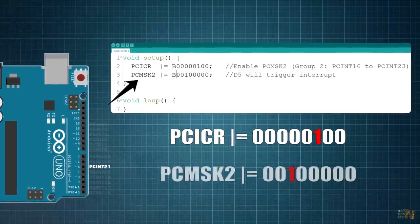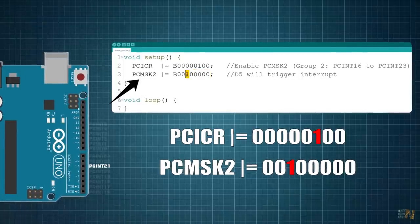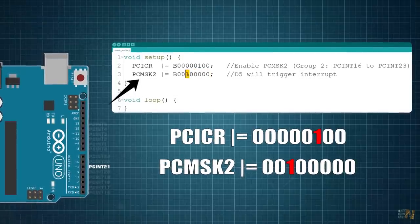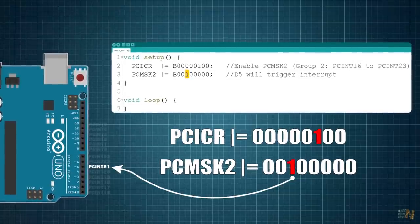Then we set the PCMSK2 register to 00100000 so we set the bit for the PCINT21 to high. So now digital pin D5 will trigger interruptions, each time the input changes its value.